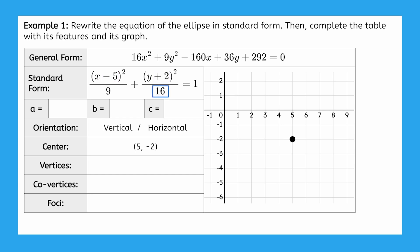Since the larger denominator is 16 and it happens under y, we know this is a vertically oriented ellipse with major radius 4, which means the vertices will be 4 units up and down from the center, landing them at 5, negative 6 and 5, 2.